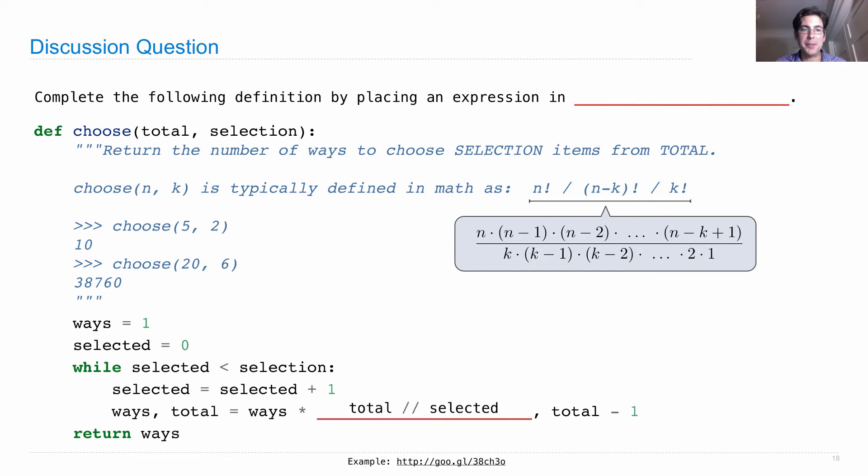So you can multiply in total and divide out selected. If you do this over and over again, you compute n choose k.